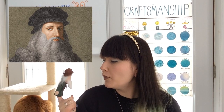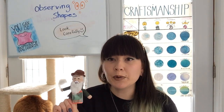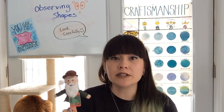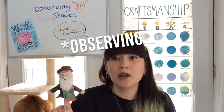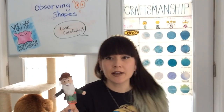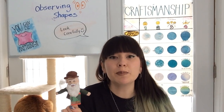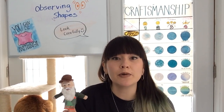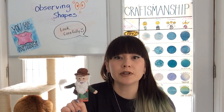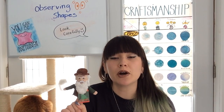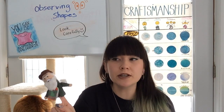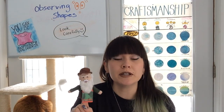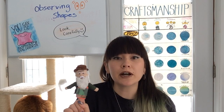Today we're going to be talking about the artist Leonardo Da Vinci because he was a master of observing. Observing means to look carefully at something. It is a very important task for artists because it allows us to look at the shapes, look at the textures, and draw or paint them accurately. Observing the world around us also gives us inspiration and ideas for our artwork.